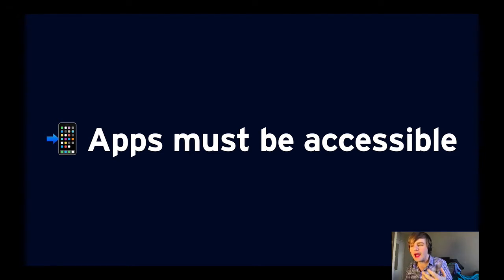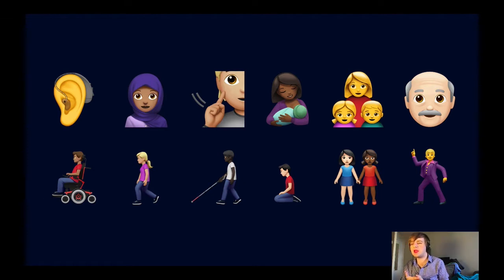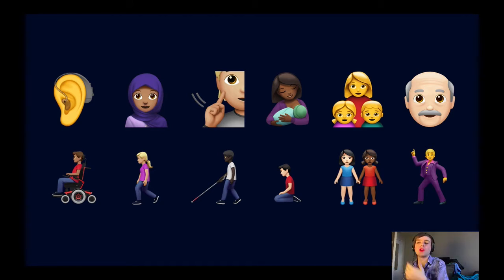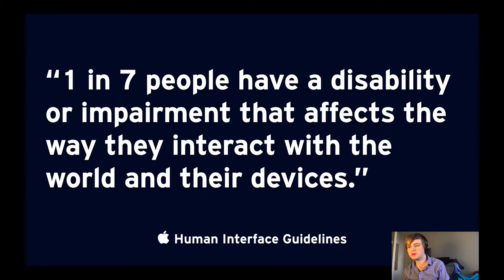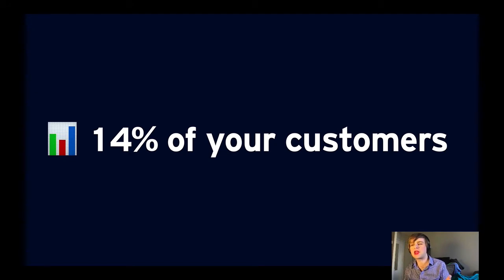The apps that we make must be accessible. People of various levels of ability need to use our apps every day. Software is now everywhere and it's very difficult to navigate the world without using apps on your phone — just like it was difficult for wheelchair users in the sixties to navigate their campuses and their cities. One in seven people have a disability or impairment that affects the way they interact with the world and their devices, according to Apple's Human Interface Guidelines. That's 14% of your customers that need you to implement these accessibility features.